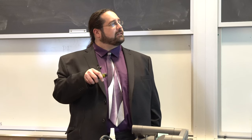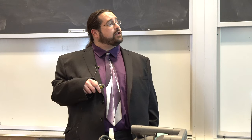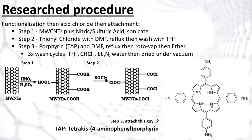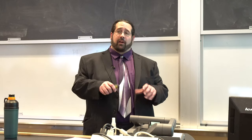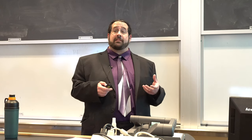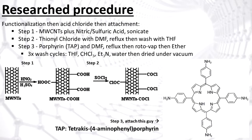This led me to a literature procedure I wanted to base my research on. It took a multi-walled carbon nanotube, put it in a concentrated acidic solution of nitric and sulfuric acids, and sonicated it for about six hours. Sonication agitates a solution with sound waves to break apart the nanotube and create defect sites, allowing the acids to attack and create carboxylic acid groups. The second step takes those carboxylic acid groups, converts them with thionyl chloride into acid chlorides, which then allow the four amino groups of the tetrakis-4-aminophenyl porphyrin — TAP — to create an amide bond.